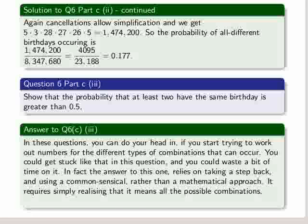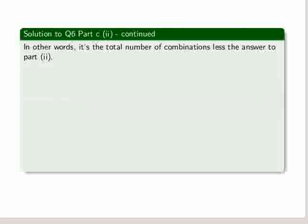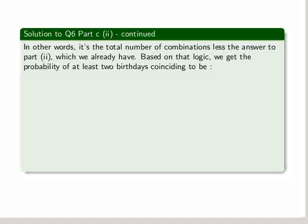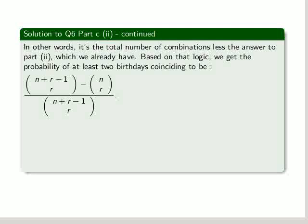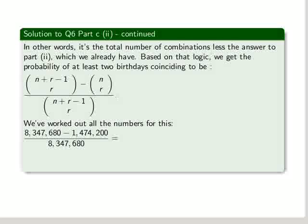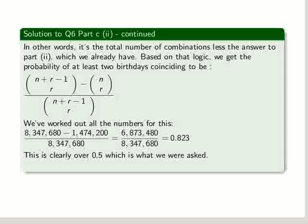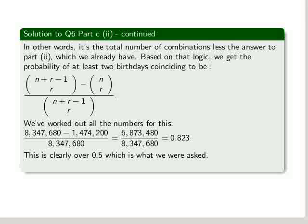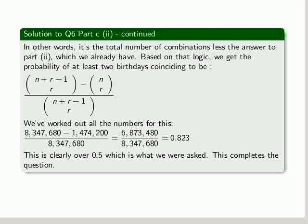It requires quite simply realizing that it means all the possible combinations which are not on all different days. Okay, what have we just done? Well, we've worked out the total number of combinations for all different days. So that's the answer to part 2. So on that logic, we get the probability of at least 2 birthdays coinciding, at least 2, to be the n choose r with repetition formula minus the n choose r without repetition formula all over n plus r minus 1 choose r. Okay, so that's the summary of the logic here. Now, we've worked out all the numbers for it. So we just expand and then that gives us that fraction and we get 0.823. Now, actually, the question was whether this is over 0.5. Well, yes, I think it is. 0.8 is over 0.5 and that completes this question. Thank you.